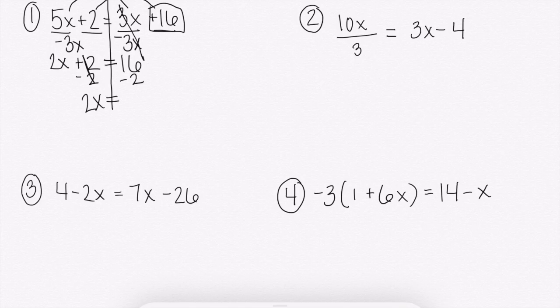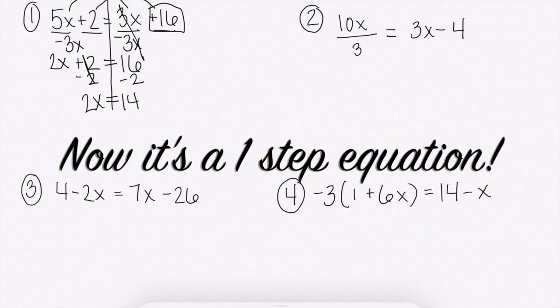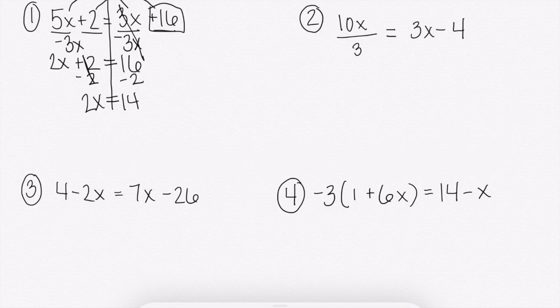16 minus 2, remember, do it to both sides. We're going to get 14. And remember, we're trying to solve for x. So now it's just a one step equation. How do I get rid of 2 times x? We divide. 2 divided by 2 would get us 1 or 1x or just x. And then we did it to the left side, so we have to do it to the right side. 14 divided by 2 would get us 7.